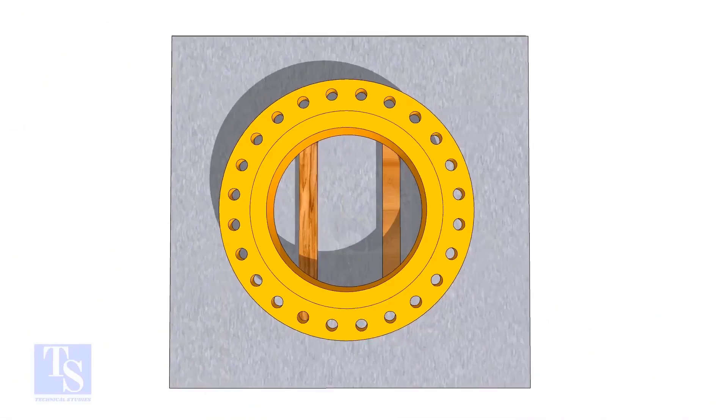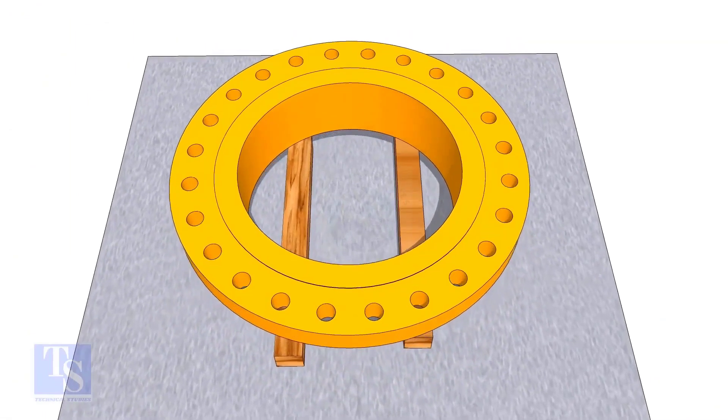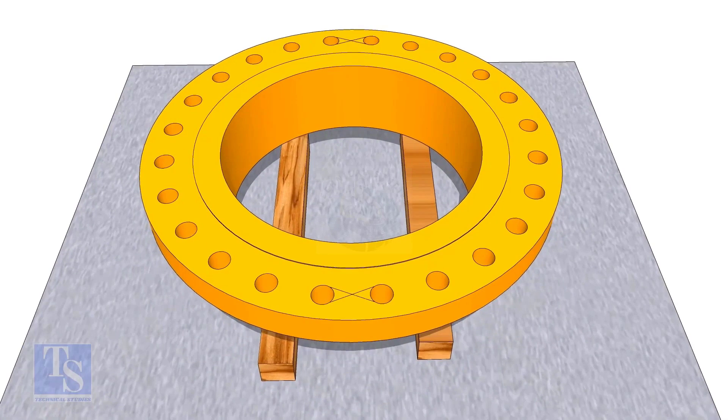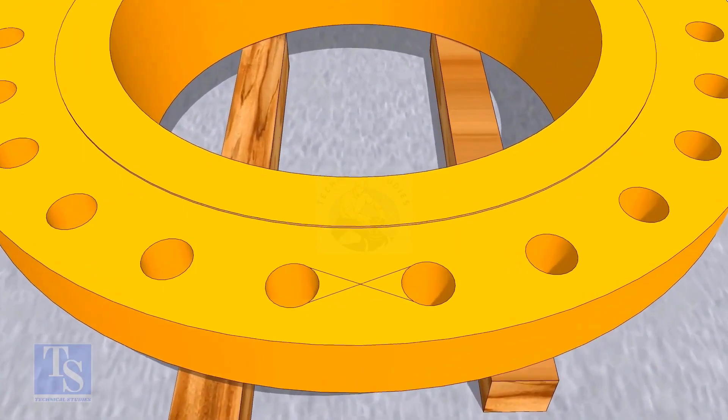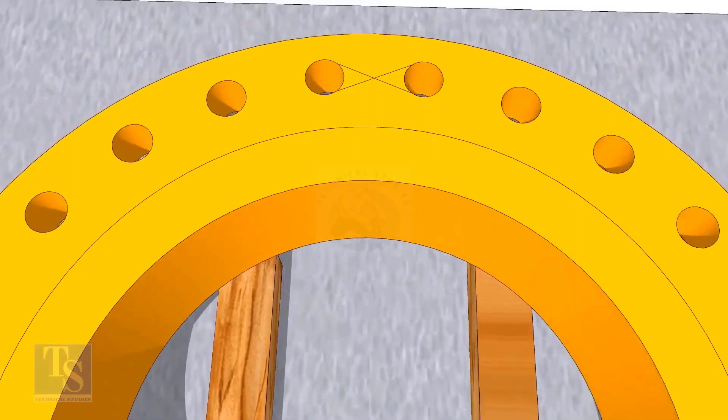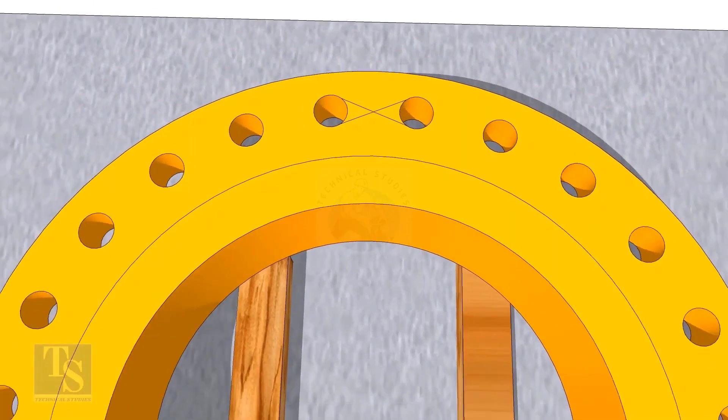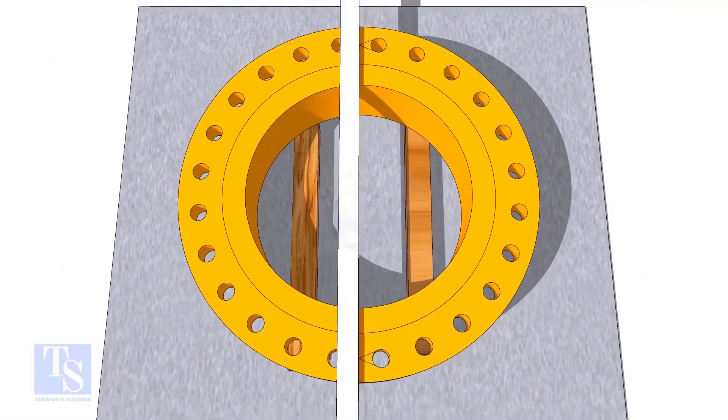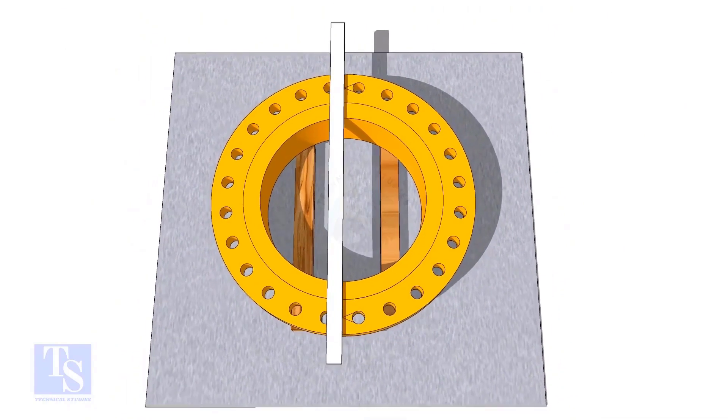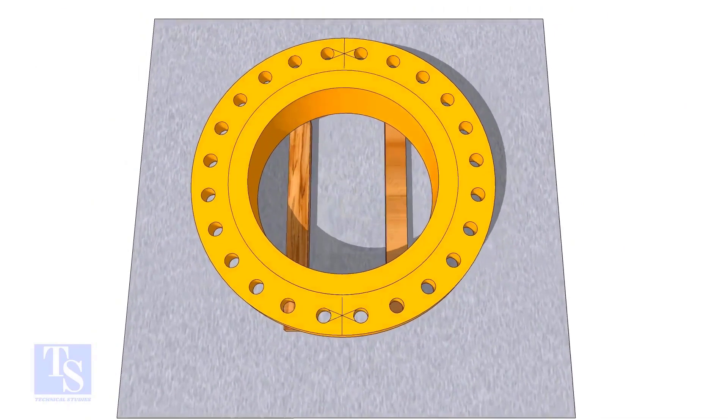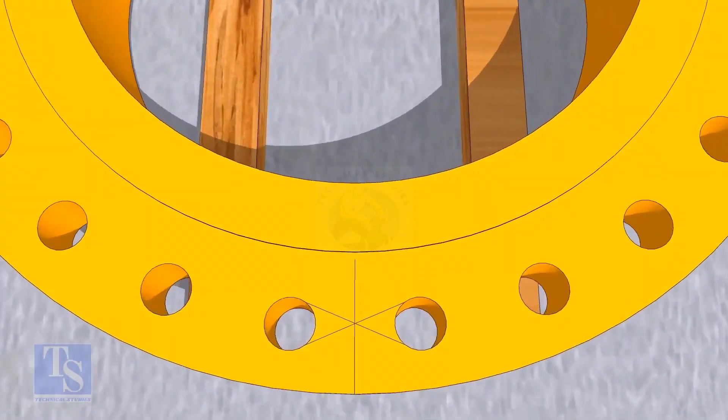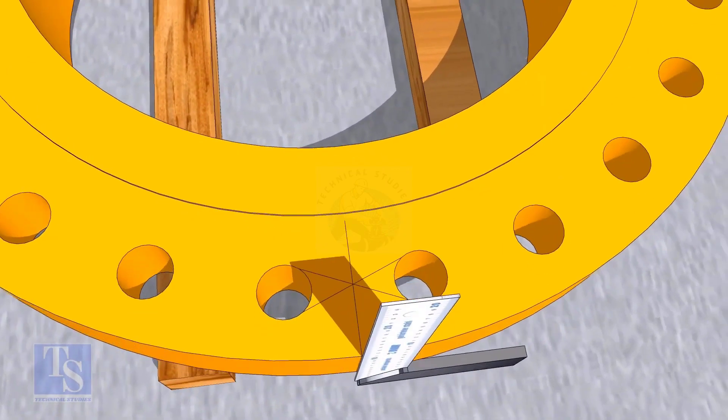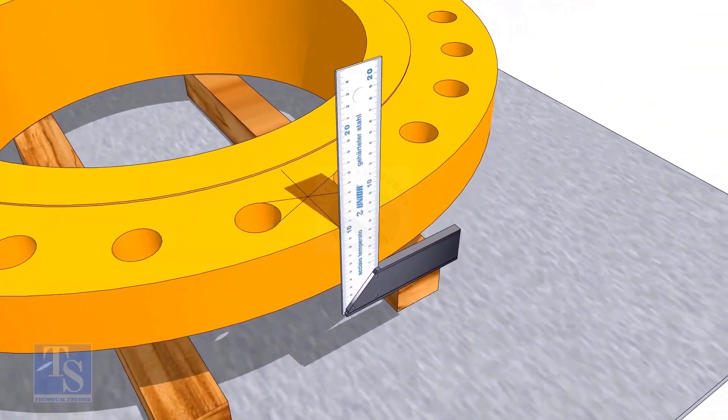In the second method, you need to mark the center line of the flange. Draw tangential lines on two adjacent holes on opposite sides. Draw a line as shown. Transfer the center line to the side of the flange.